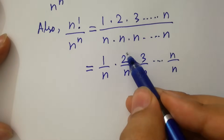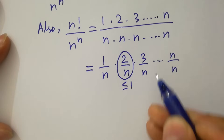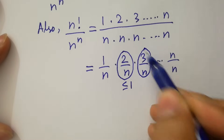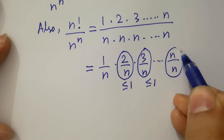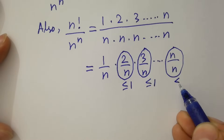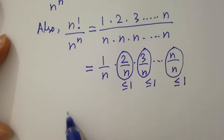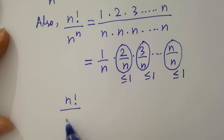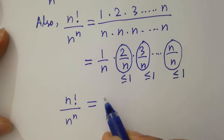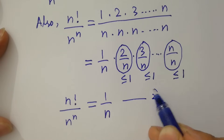Since 2/n is less than or equal to 1, 3/n is less than or equal to 1, then n/n will also be less than or equal to 1. So n factorial over n to the power n will be less than or equal to 1/n. Let's call this the second equation.